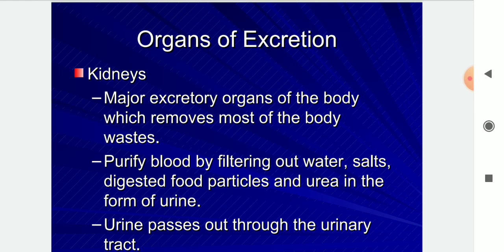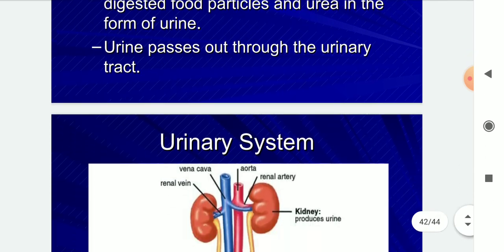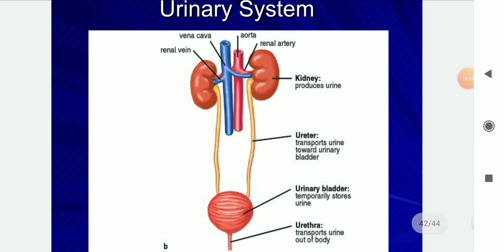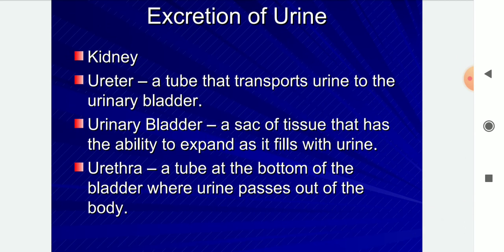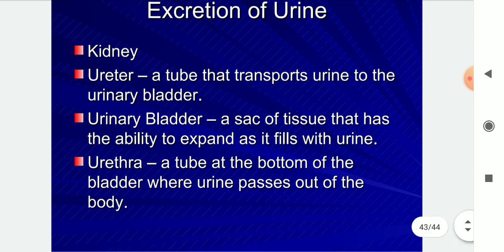The kidneys are the major excretory organs of the body. They purify blood by filtering out water, salts, digested food particles, and urea, forming urine which passes out through the urinary tract. The urinary system includes the vena cava, renal vein, ureter, urinary bladder, and urethra. The ureter is a tube leading to the urinary bladder — a sac of tissue that expands as it fills with urine. The urethra is a tube at the bottom of the bladder where urine passes out of the body.